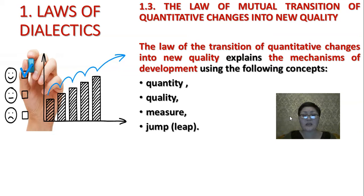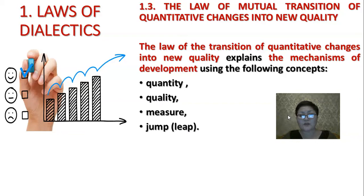The second law of dialectics is the law of mutual transition of quantitative change into new quality. This law explains the mechanisms of development using the following concepts: quantity, quality, measure, and jump or leap. I want to give the explanation or definition of every one of these concepts.